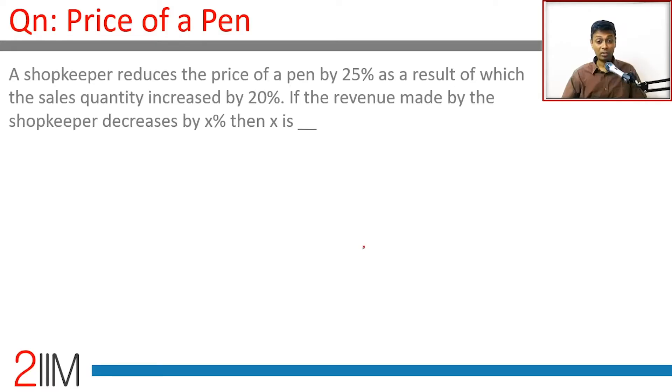A shopkeeper reduces the price of a pen by 25 percent, so it becomes 3 by 4 p. The sales quantity increased by 20 percent, number of units increased by 20 percent, it becomes 6 by 5 n.